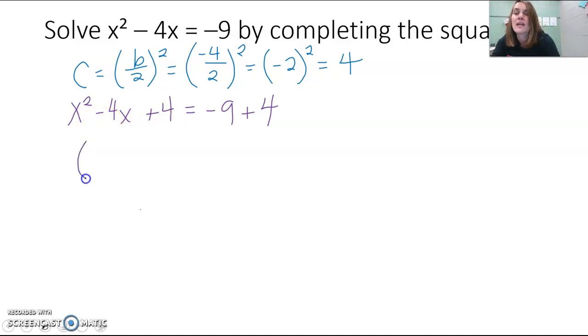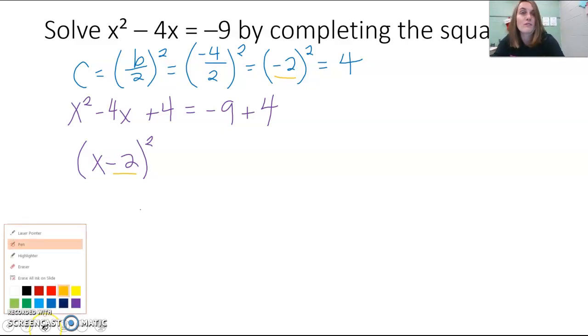So we would have x minus 2 squared because they were both negative 2. Again, those numbers here match what we had up top, the numbers that we squared. So you can always kind of use that as a checking point to make sure that you did factor correctly.